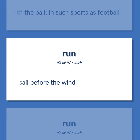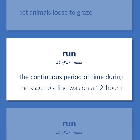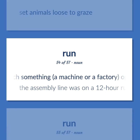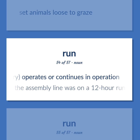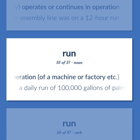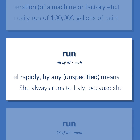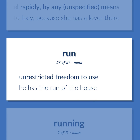Sail before the wind. Set animals loose to graze. The continuous period of time during which something — a machine or a factory — operates or continues in operation — the assembly line was on a 12-hour run. The production achieved during a continuous period of operation — a daily run of 100,000 gallons of paint. Travel rapidly by any unspecified means — she always runs to Italy because she has a lover there. Unrestricted freedom to use — he has the run of the house.